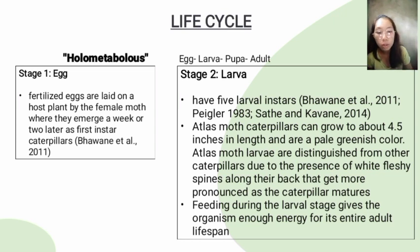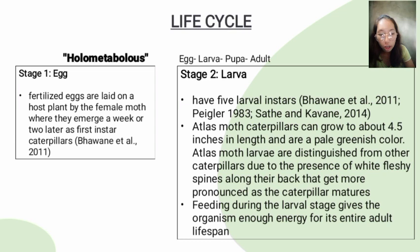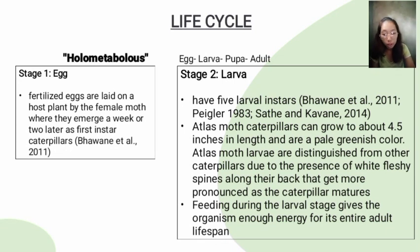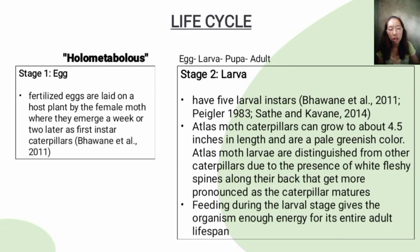The first stage is the egg: fertilized eggs are laid on a host plant by the female moth. In stage 2, the larva — atlas moth caterpillars can grow to about 4.5 inches in length and are a pale greenish color. They are distinguished from other caterpillars by the presence of white fleshy spines along their back that become more pronounced as the caterpillar matures. During the larval stage, the organism stores enough energy for its entire adult lifespan, since adult moths do not have well-developed mouthparts. The larval stage is also the most destructive stage of this insect.